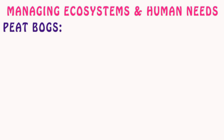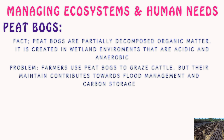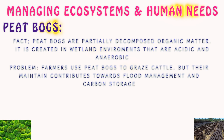Peat bogs are partially decomposed organic matter, created in wetland environments that are acidic and anaerobic. The problem is that farmers overuse peat bogs to graze cattle, but their maintenance contributes towards flood management and carbon storage. This is because peat bog ecosystems can hold many species of moss, which is great at holding large amounts of water. If the peat bogs are destroyed, excess carbon is released into the atmosphere and water is no longer held by moss species.